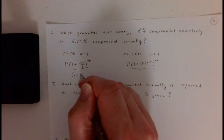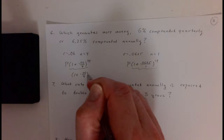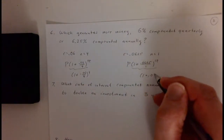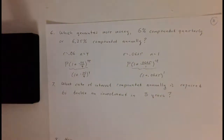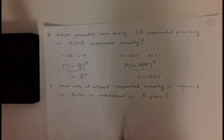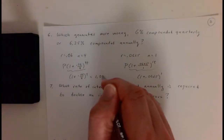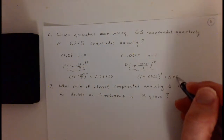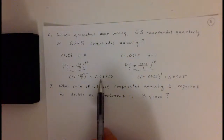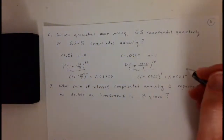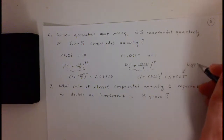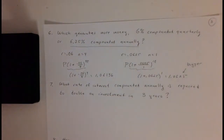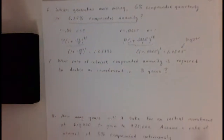It comes down to comparing one plus point zero six over four raised to the fourth power versus one plus point zero six two five raised to the first power. The first value turns out to be one point zero six one three six, and the second is one point zero six two five. We can see that one point zero six two five is bigger, so the answer is six point two five percent compounded annually.